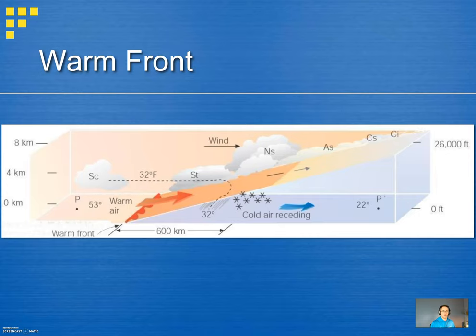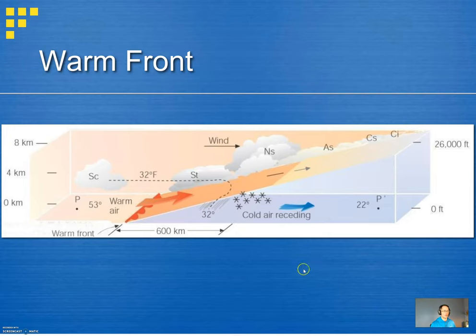We'll look at cloud types along with the precipitation expected when we deal with different frontal boundaries. Here we're looking at a schematic of the warm front in 3D, remembering that warm frontal boundaries have a much more gentle slope. This produces a relatively slow but steady amount of precipitation as we gently lift warm air poleward of the warm frontal boundary, resulting in layered, expansive stratus-type clouds ahead of the warm front — clouds that are higher and higher in the atmosphere and less prone to produce precipitation. We may also experience some frozen or mixed precipitation as warm moist air goes above a dome of cold air receding to the polar regions.